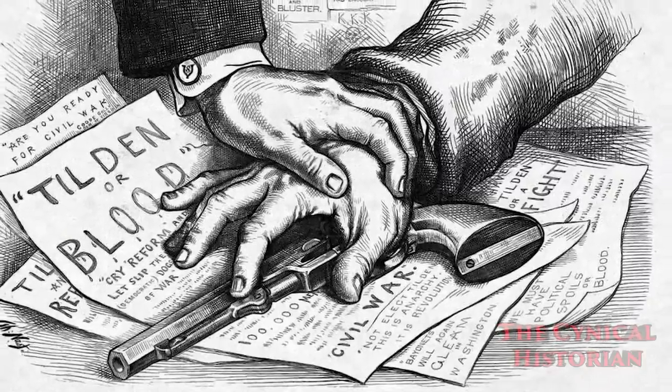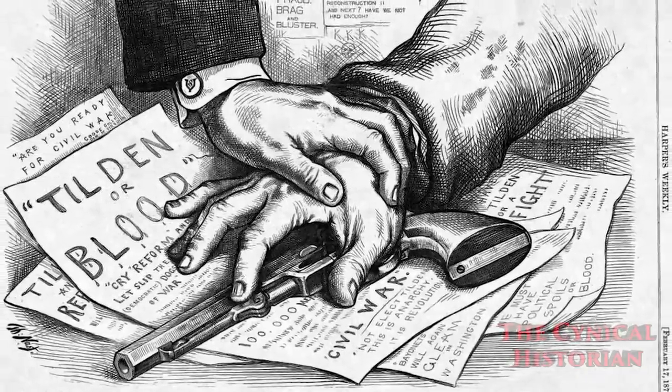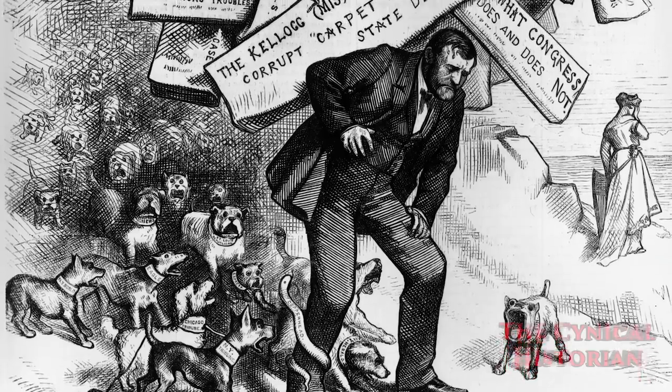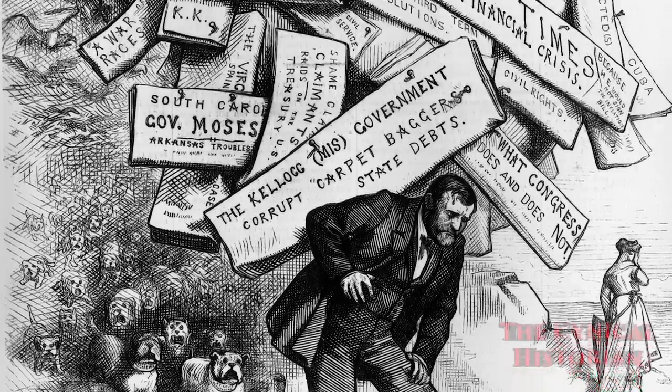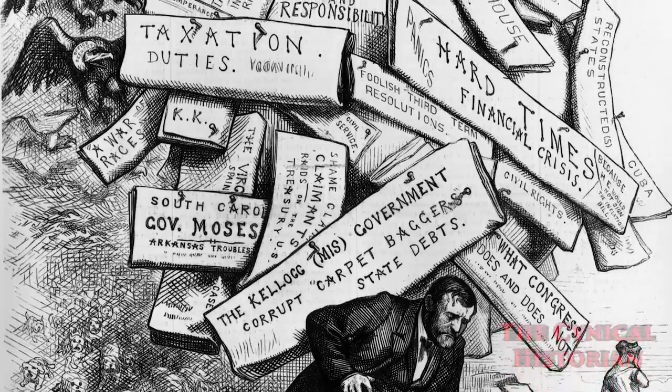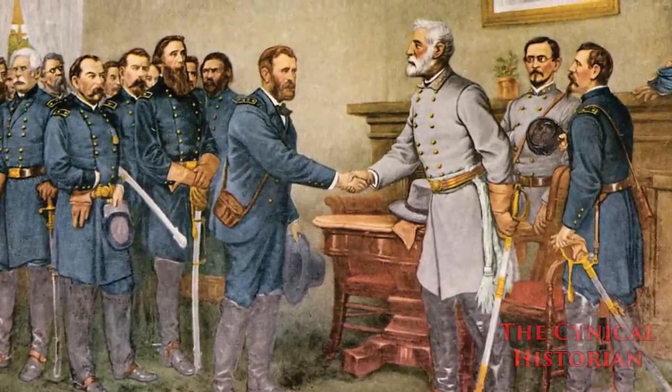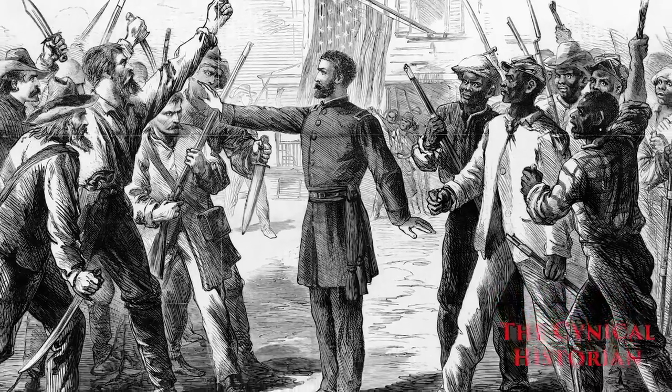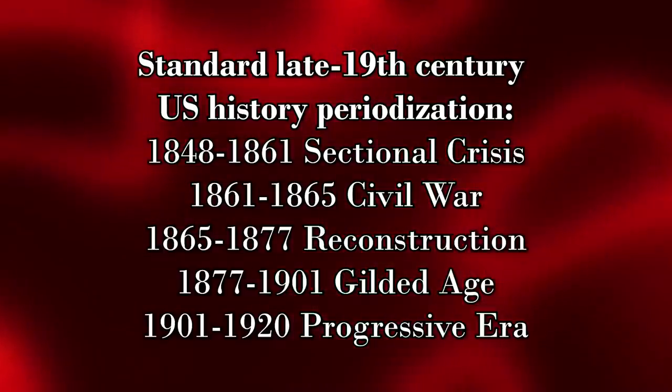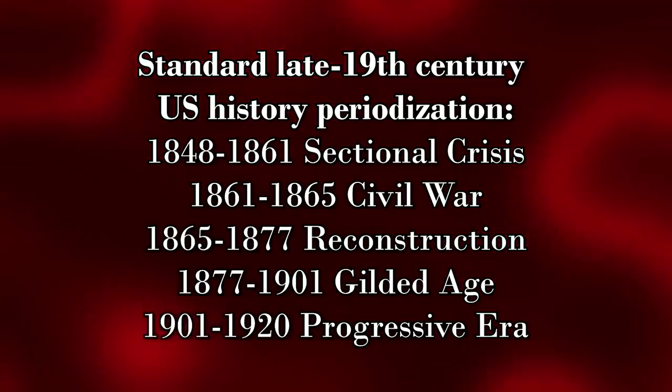The same goes for the beginning of the Gilded Age — there's no good line there either. People will often say it starts in 1877 with the end of Reconstruction, but you can't really talk about the Gilded Age without talking about the Grant administration during the 1870s. Sometimes people put it at the end of the Civil War, but that puts you during Reconstruction. So there's no clear dividing line, and you can see that pretty much any way we try to divide up eras is going to have these kinds of problems. They always do.